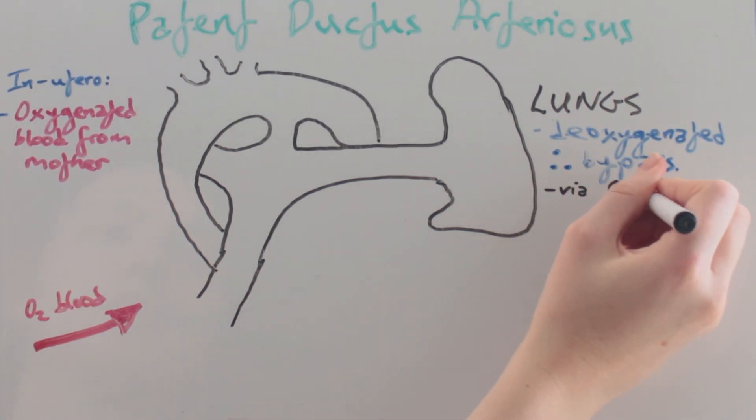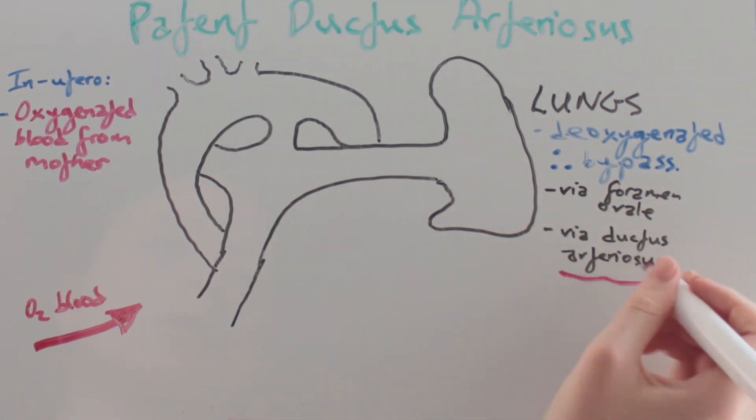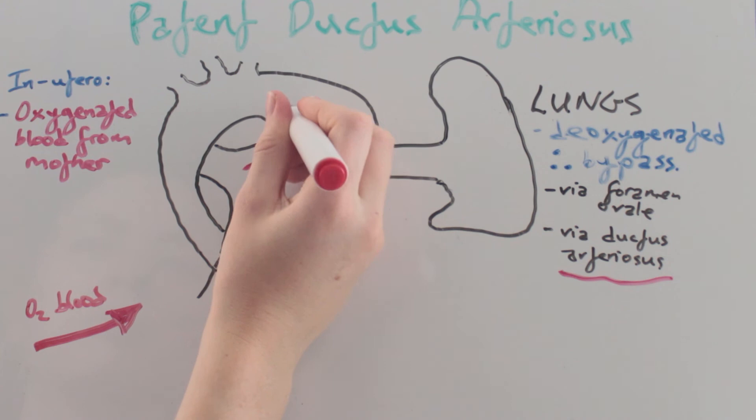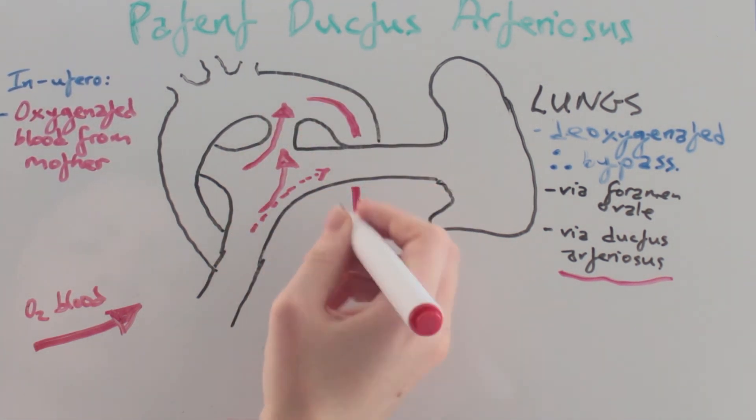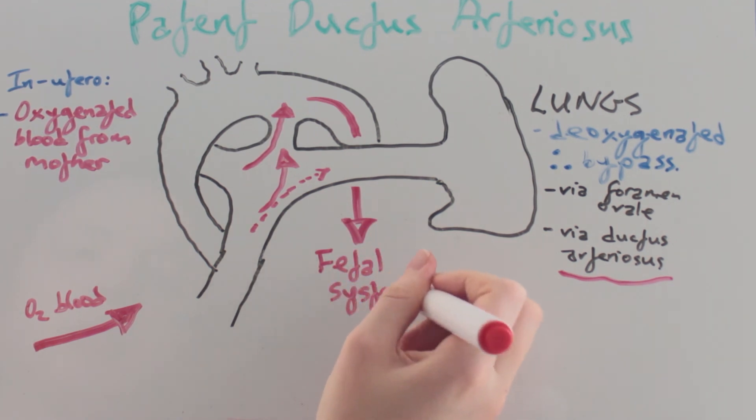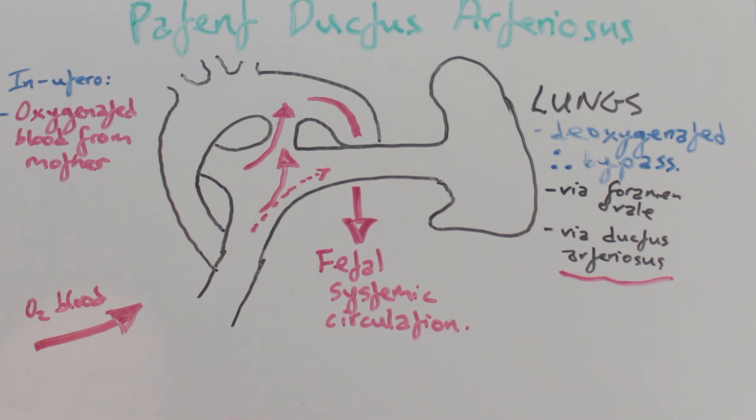This is achieved via the foramen ovale and ductus arteriosus which enable physiological shunting prior to birth. With our patent ductus arteriosus, oxygenated blood coming from the right side of the heart can be directed from the pulmonary trunk straight into the fetal systemic circulation.